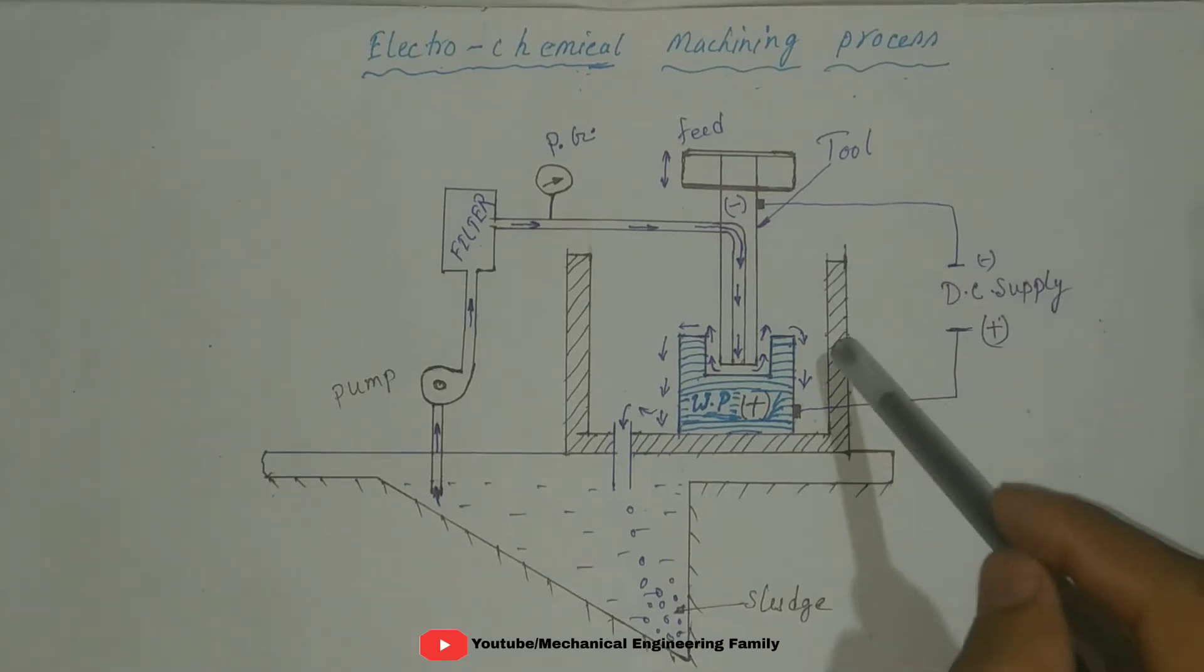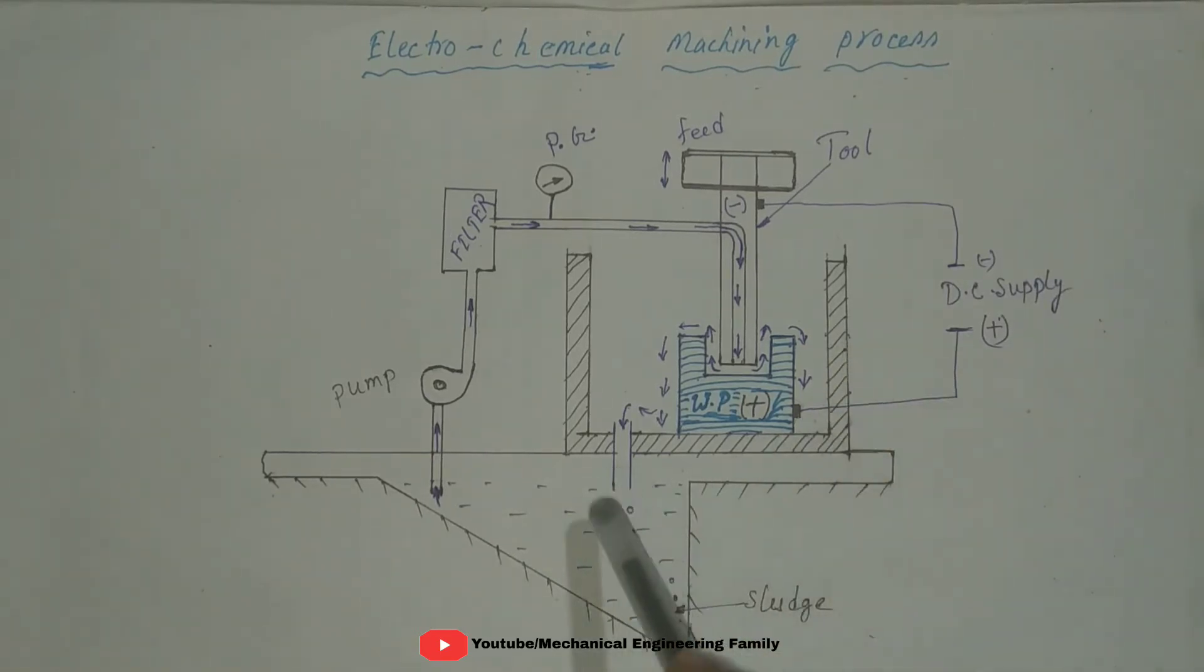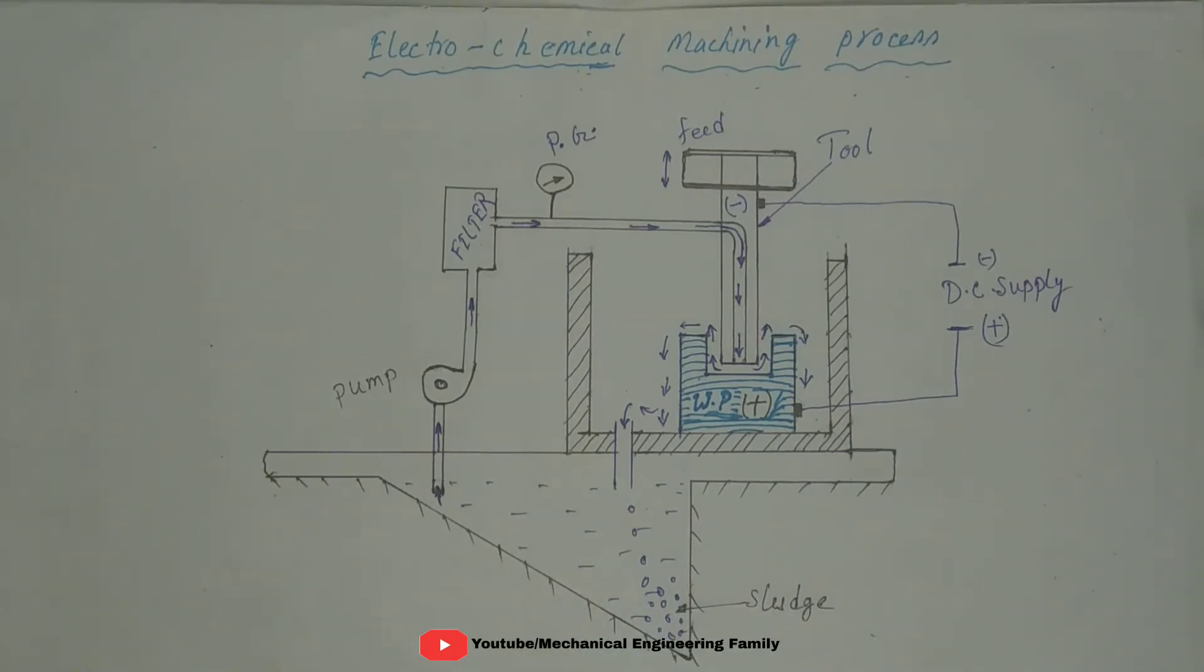This is tank and this is electrolyte. The most widely used electrolyte in this process is sodium nitrate solution. Although some other chemicals like sodium hydroxide, sodium sulphate, potassium nitrite, potassium chloride are also used.